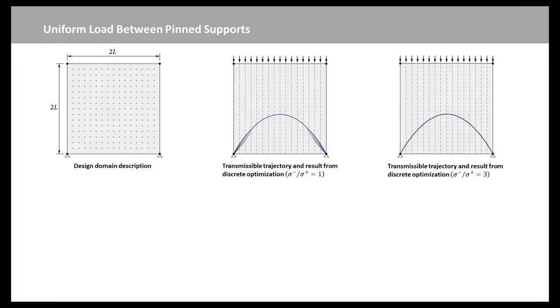Now we can use the layout optimization with transmissible loads to analyze a simple example. This example involves vertical loads uniformly distributed along a horizontal line and free to migrate along the vertical lines, and is supported by two pinned nodes at the left and right bottom corners.